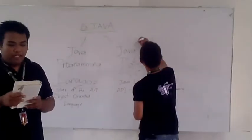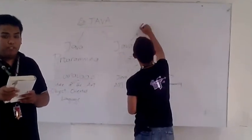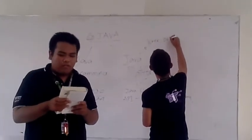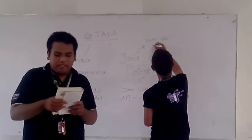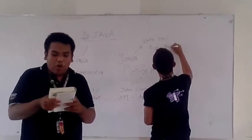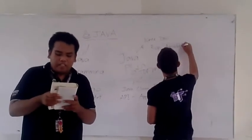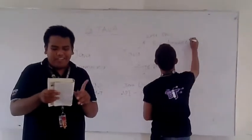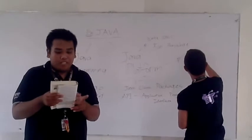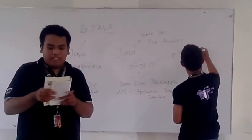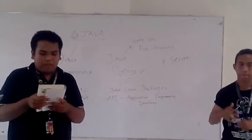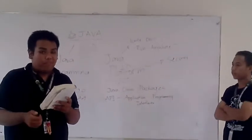Thirdly, a key element of Java is its security features. Both the language and the platform were designed from the ground up with security in mind. The Java platform allows users to download code over a network and run it in a secure environment. Untrusted code cannot infect the whole system with a virus, access the network, or write files from the library and so forth. This capability alone makes the Java platform invaluable.